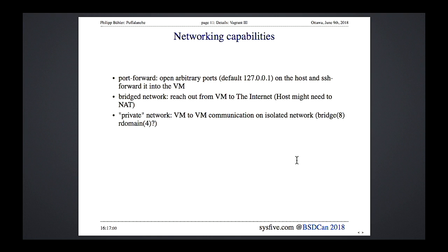Vagrant has networking capability concepts you must implement. There's port forwarding: you can say 'open port 8080 on the host' and it connects over an SSH port forward to an Nginx instance inside the VM on port 80 — so you can open your browser on localhost:8080 and be served from the Nginx inside the VM.